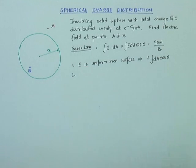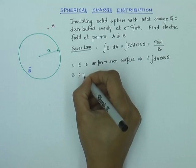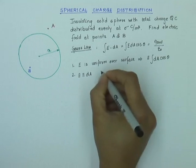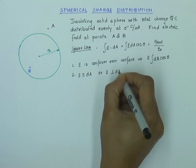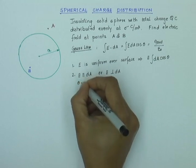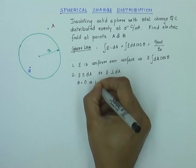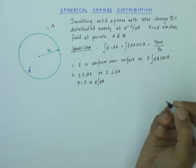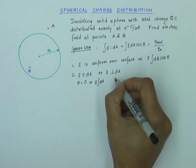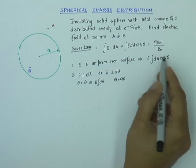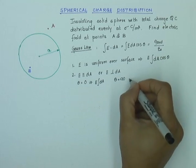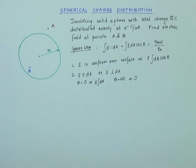The second trick is to choose a Gaussian surface such that at each point E is either parallel to dA or E is perpendicular to dA. When E is parallel to dA, theta equals zero, so the integral E dA cos θ becomes simply the integral of dA. When E is perpendicular to dA, theta equals 90°, and cos 90° is zero, so the integral becomes zero.